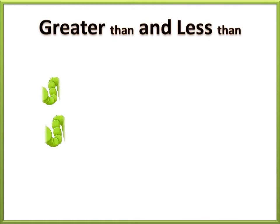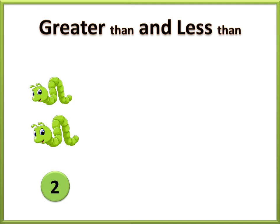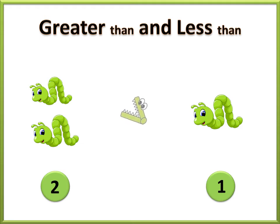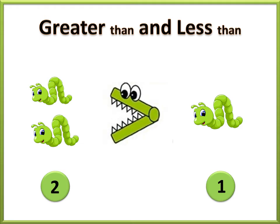Let us count the number of worms. Two. One. Two is greater than one. So, we use the greater than sign.